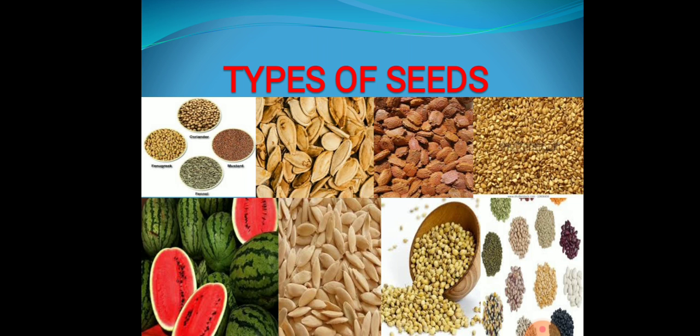Then some seeds are flat. Which are flat seeds? Seeds like pumpkin seeds, watermelon seeds, cucumber seeds, musk melon seeds. In this picture you can see pumpkin seeds, bitter gourd seeds, cucumber seeds, watermelon seeds — they are flat. In this way you can make more groups and write the names of seeds. You have to do this activity.